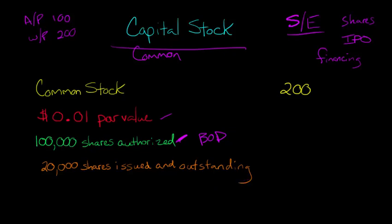You might wonder why issued and outstanding could be different — here they're the same, but why could they differ? Why, if they issued 20,000, would there not automatically be 20,000 shares outstanding? That's because the firm can buy back shares, which is called treasury stock. The firm can have a stock buyback and hold on to those shares, then maybe reissue them later or give them to employees. So the amounts authorized, issued, and outstanding can actually be three different numbers.